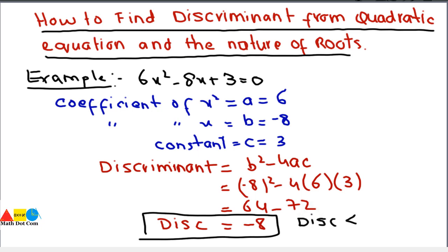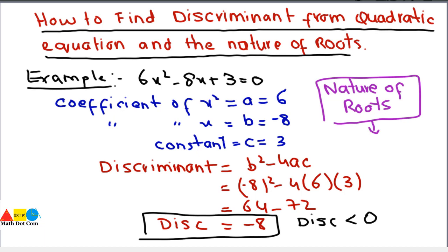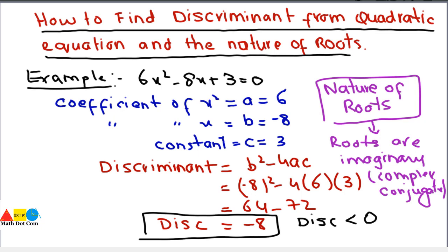The discriminant is less than 0. When the value of discriminant is less than 0, we will be having roots that are imaginary and complex conjugate. So the nature of the roots is complex or imaginary — complex conjugate. This is how you can determine the nature of the roots using the discriminant without solving the entire quadratic equation.